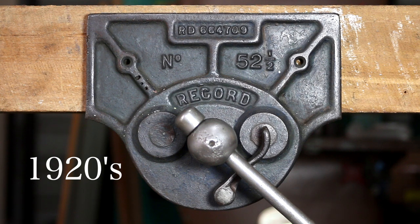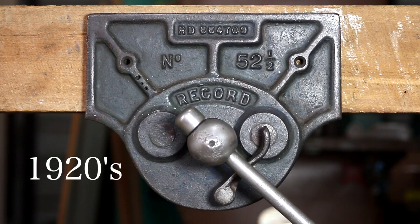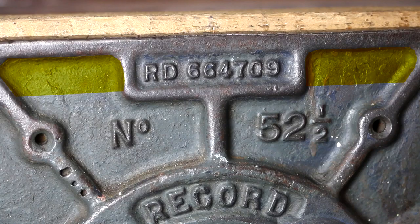This version was first produced in 1918 under the registered design 664709. Interestingly, this particular unit may be among one of the first that Record produced, as it is missing the Made in England stamp.